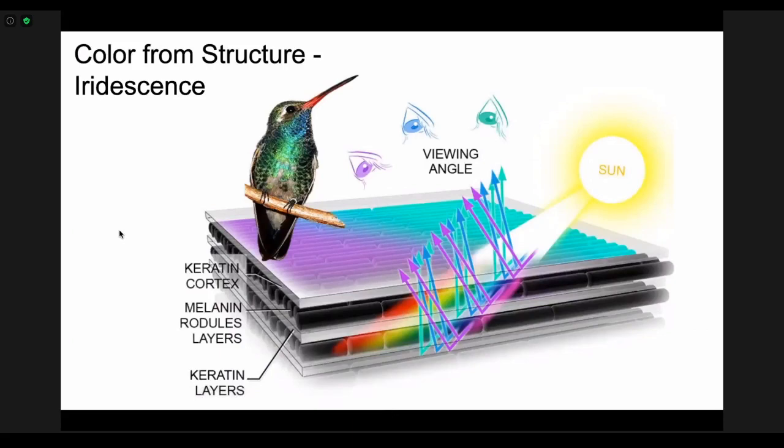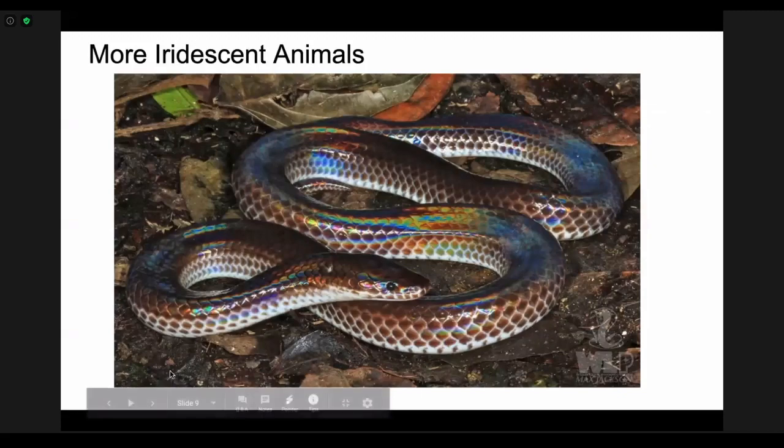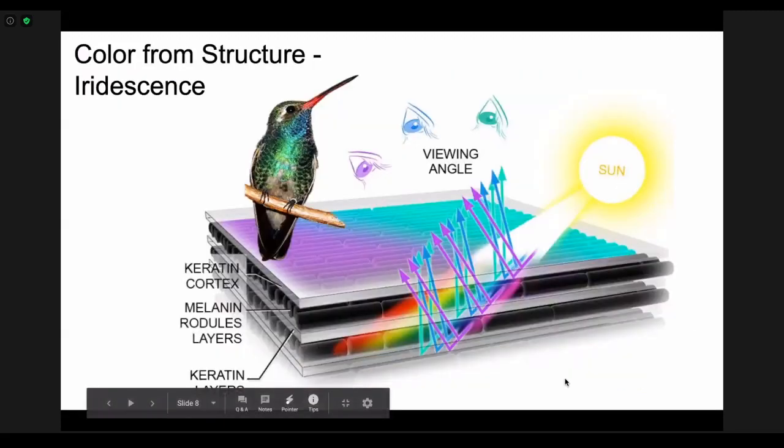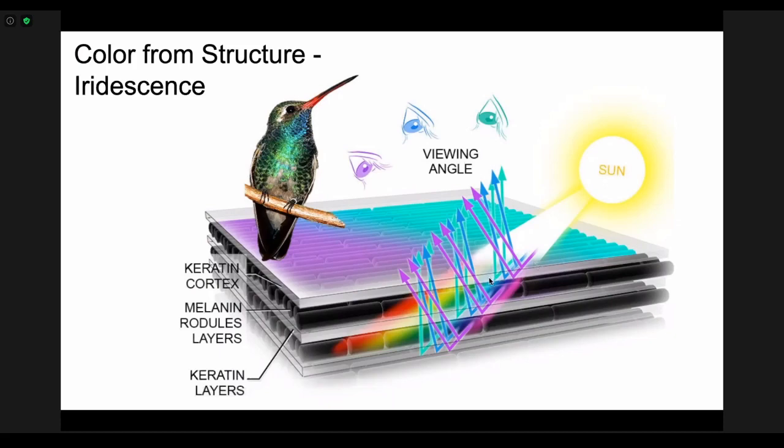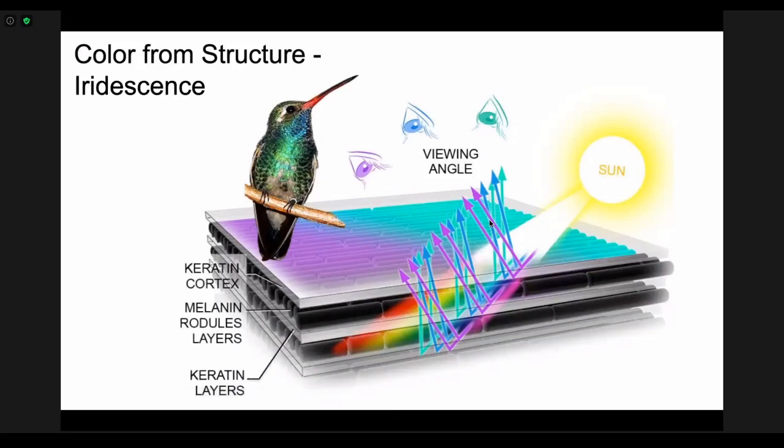Here's an animal where that kind of happens. In this case it is called iridescence. With this bird we have a couple of layers: we have that keratin cortex again, and then some melanin rodules, and then another keratin layer. We have the white light coming from the sun, and when the light hits this first keratin layer, the green light gets reflected up in this direction, blue light gets reflected in this direction, and then purple gets reflected off in this direction. All of the other colors get absorbed. At each keratin layer those colors green and blue and purple get reflected at the same angle.